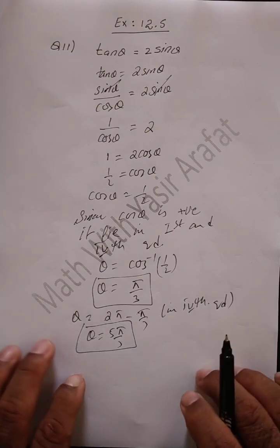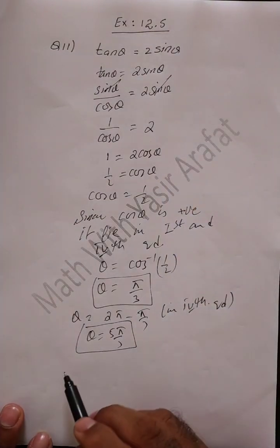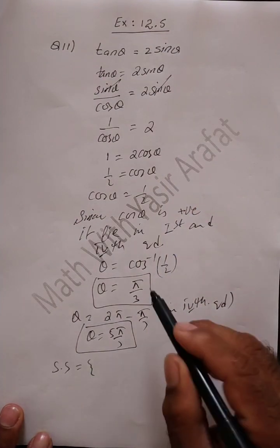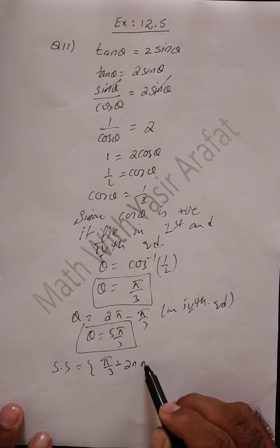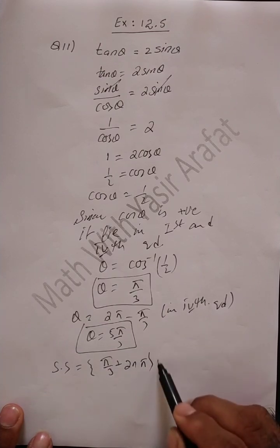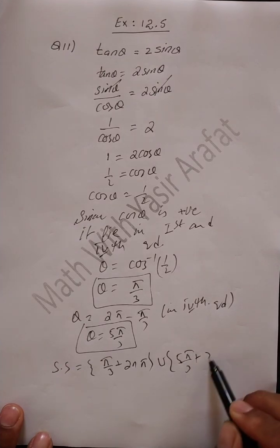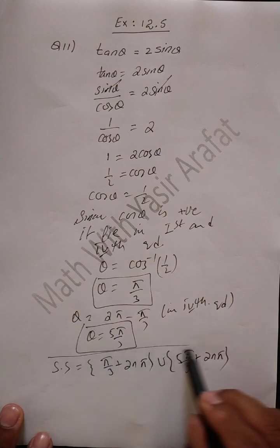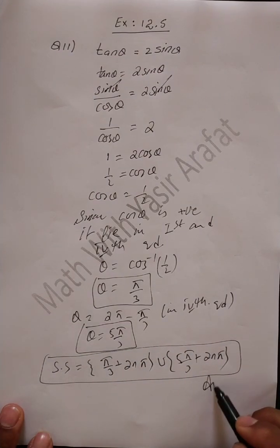You can see that two angles have come. The function is cos θ, so its general period is 2nπ. Putting the values directly: pi/3 + 2nπ union 5pi/3 + 2nπ. This is the general solution for Question 11.